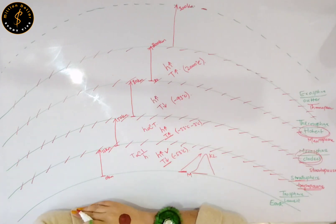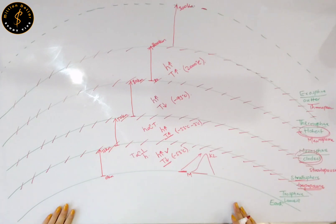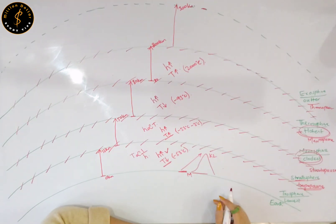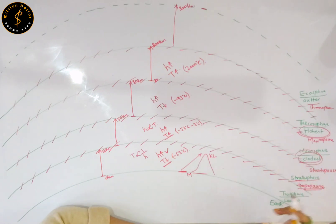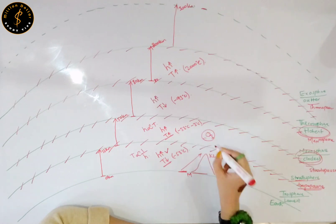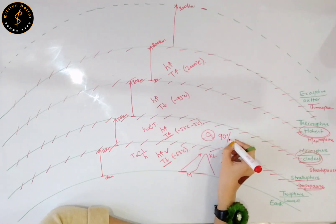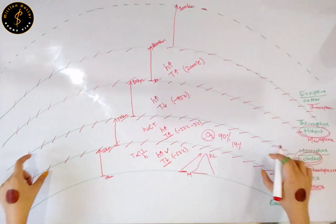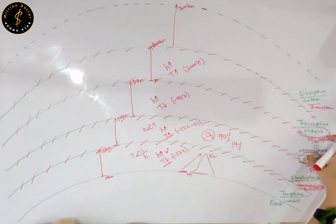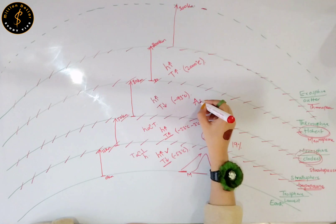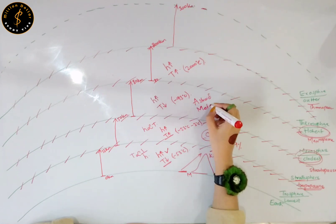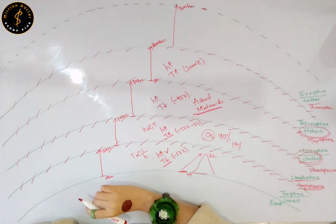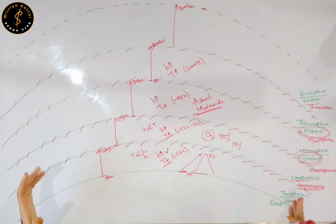If you need to write the properties of troposphere, stratosphere, mesosphere, thermosphere, and exosphere in an exam, I think I have given you many points already. Let's discuss some more properties. One important property of the stratosphere is that ozone exists there — almost 90% of ozone exists in the stratosphere. Also, 19% of the total gases exist in your stratosphere. Similarly, an important property of the mesosphere is that asteroids and meteoroids occur there.